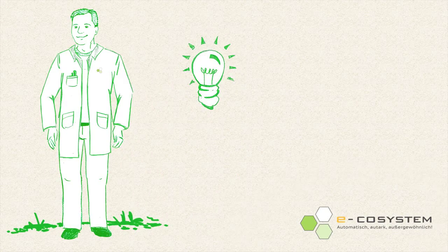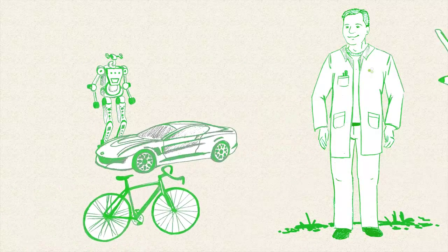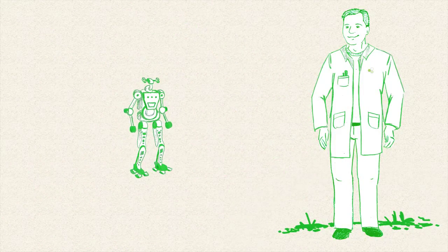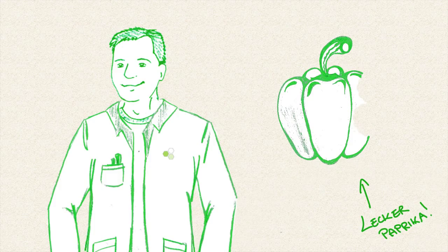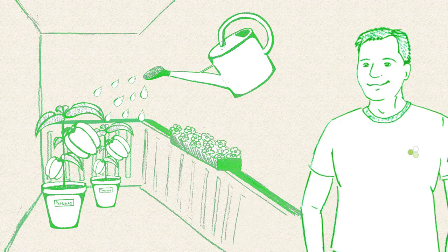This is Matthias. Matthias is passionate about engineering. He is doing that very well and already set a lot of machines in motion. Matthias also enjoys eating vegetables. And because he prefers picking fresh peppers from his balcony, he grows them himself.